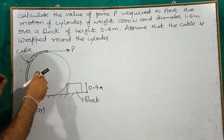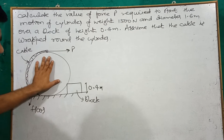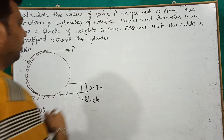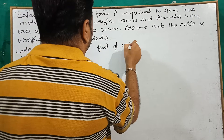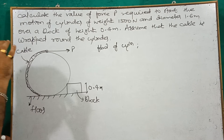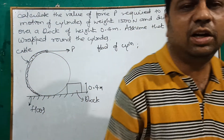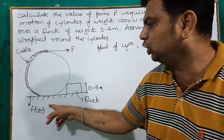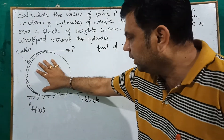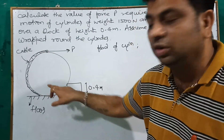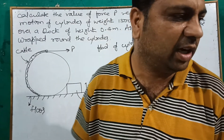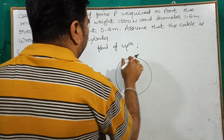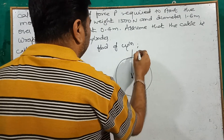When the cylinder rolls over the block, there will be no contact from below, so there will be no reaction from below. We will take the FBD of this cylinder. When the cylinder rolls over the block, it will not have any contact with the base and hence there will be no reaction from the base. We take the weight of the cylinder acting vertically downward through the CG of the cylinder.